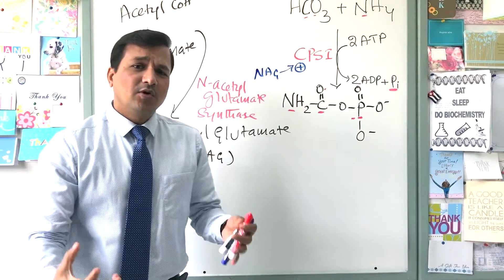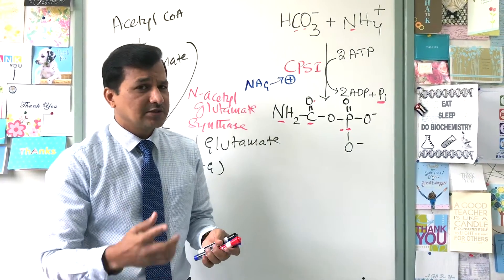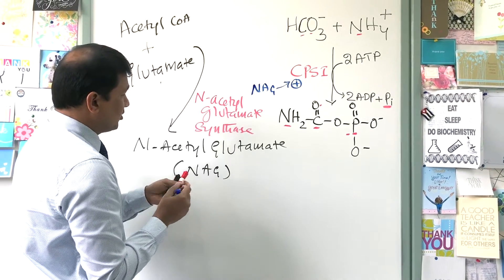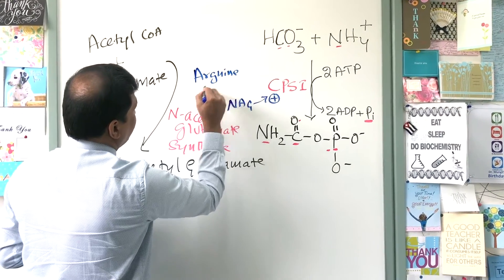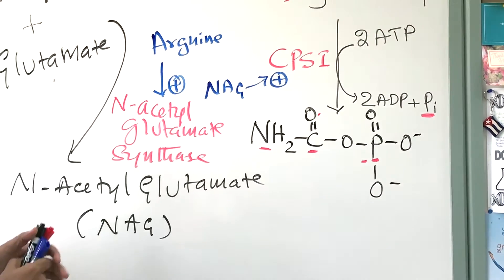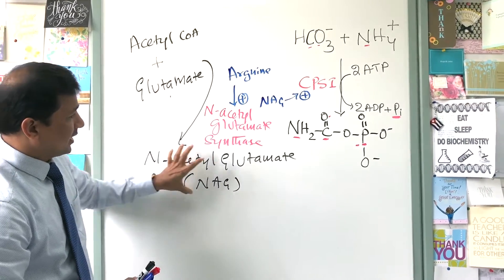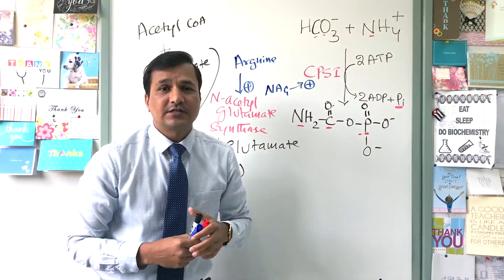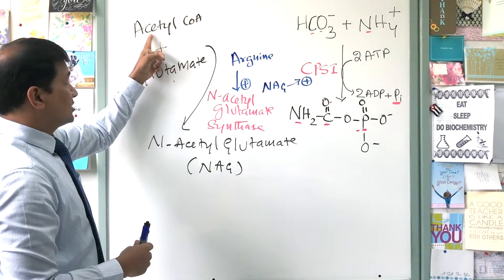Furthermore, whenever there are increased levels of arginine available in the mitochondrial matrix or cytoplasm, the excess arginine itself will act as a positive modulator on N-acetyl glutamate synthase. Thereby, N-acetyl glutamate synthase condenses acetyl-CoA with glutamate to make N-acetyl glutamate, and that N-acetyl glutamate acts as a positive modulator on CPS1.